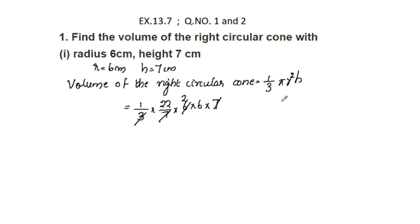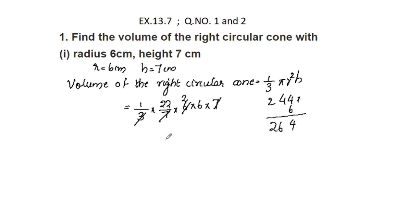44 × 6 = 264. So the volume of the right circular cone is 264 cm³.